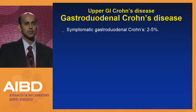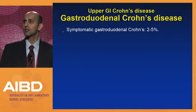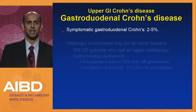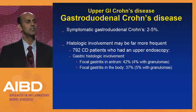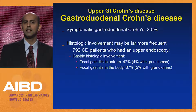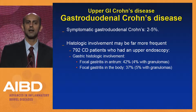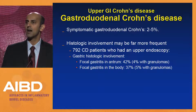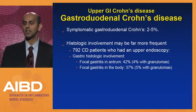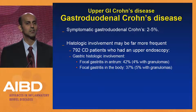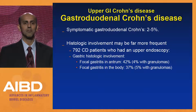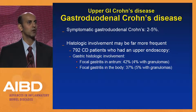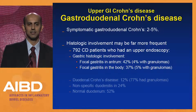Moving to the stomach, symptomatic gastroduodenal Crohn's disease is about 2 to 5% — slightly more common than esophageal Crohn's. However, histologic involvement seems far more common. One series of about 800 patients who had upper endoscopy with systematic gastric biopsies found focal gastritis in the antrum in as many as 40% of patients with Crohn's disease — many without macroscopic lesions — and about 4% had granulomas in the stomach. Focal gastritis in the body may also be seen in about 37%, with 5% having granulomas. For this talk, we're focusing primarily on patients with endoscopic lesions, not isolated histologic involvement.